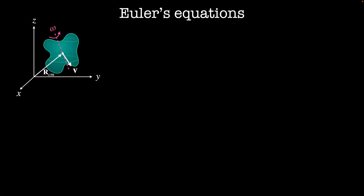Hello and welcome to Classical Mechanics 2. In this video we'll be using principal axes to derive equations for the physics of rotating bodies. These equations are collectively known as Euler's equations. We'll start out with our 3D rigid body here. It's rotating at angular velocity omega through an axis that's anchored at the center of mass, and it's also translating at velocity v.